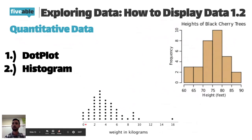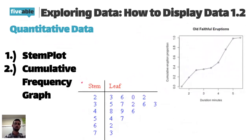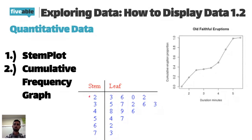Next, we have the stem and leaf plot. The stem and leaf plot is a popular one, however you won't want to use it for really big data sets — anything more than about 30 or 40 data points, you'd want to use a histogram instead. The stem categorizes the leaves — for example, this data point is 23, then 26, 20, 22. The stem tells you the first digit and the leaf tells you the last digit. If you have a three-digit number like 123, the stem would be the double digit and the leaf would be the single digit.